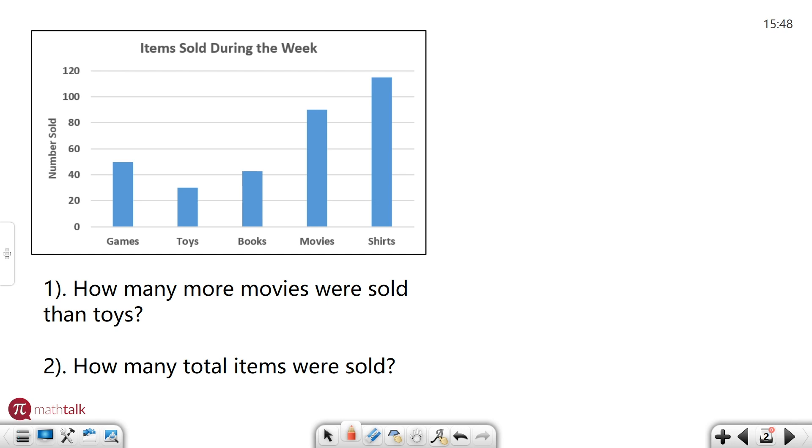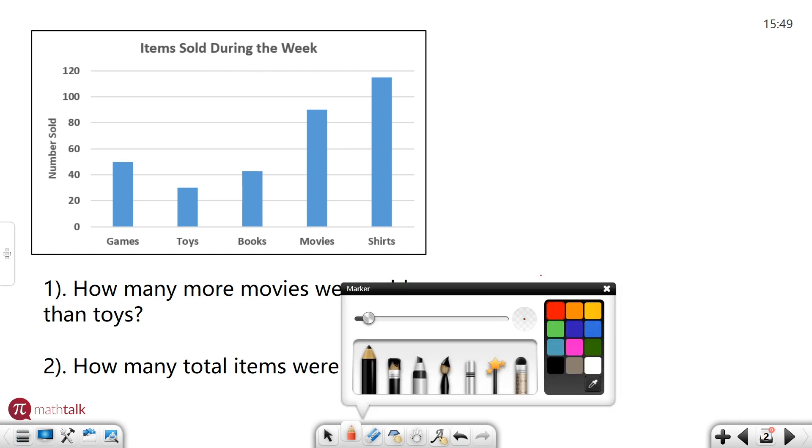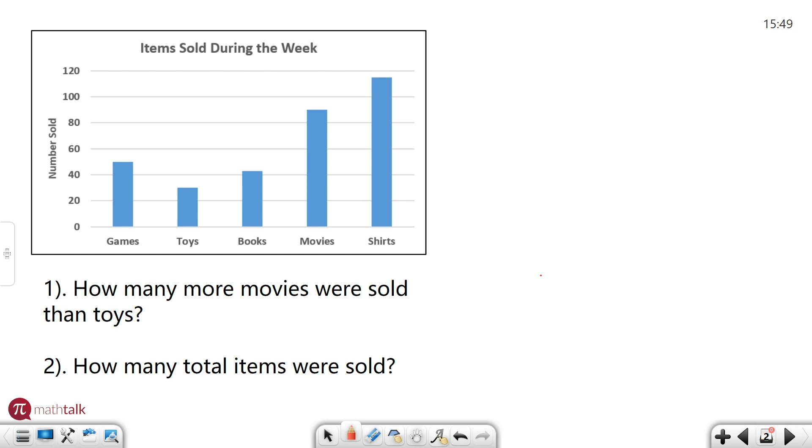Question number one says how many more movies were sold than toys? Obviously, in order for us to be able to do that we need to know how many movies and how many toys were sold. If I look at the movie column here, I'm going to go up to the top of the bar graph. It looks like it's right in between 80 and 100, so we'll call that about 90. Usually when they don't give you very specific detailed lines on your y-axis, you can estimate it.